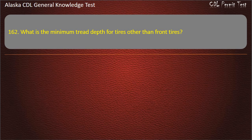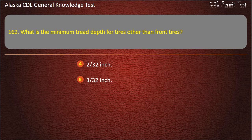Question 162. What is the minimum tread depth for tires other than front tires? 2/32 inch, 3/32 inch, or 4/32 inch. Answer: 2/32 inch.